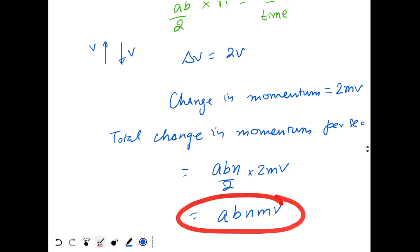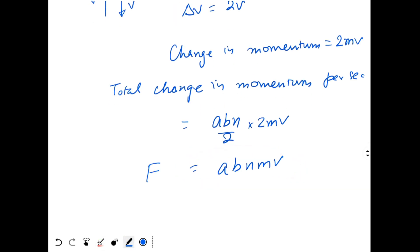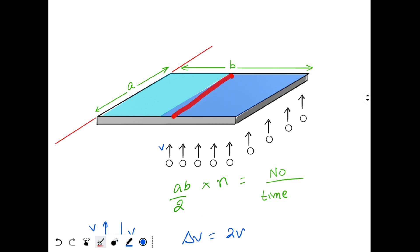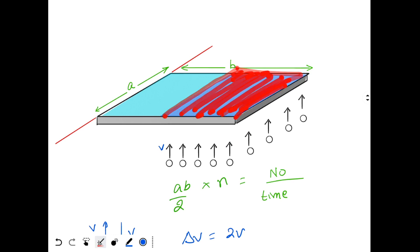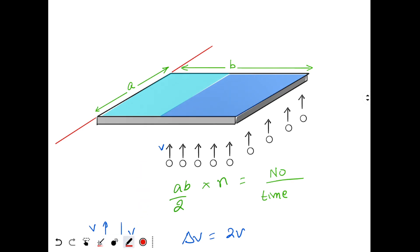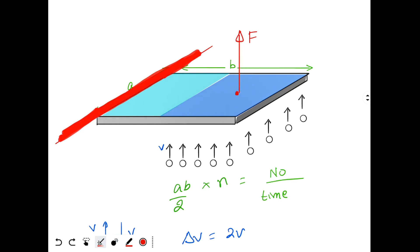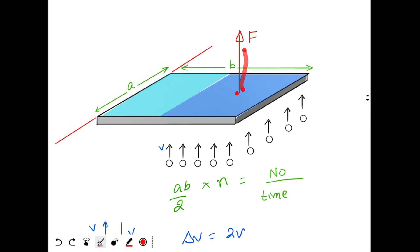The total change in momentum per second is (AB/2) × n × 2mv = ABnmv. This is also the total force F applied by the balls on the plate. Since this force acts uniformly over the entire shaded area, the equivalent single force acts at the center of the shaded region. This force creates a torque about the hinge, trying to balance mg.